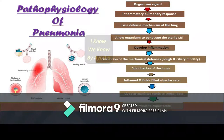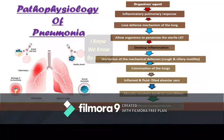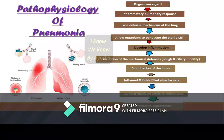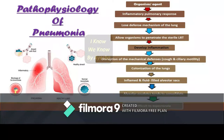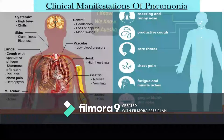Coming to pathophysiology of pneumonia: any causative agent entering the respiratory tract leads to inflammatory pulmonary responses, causing loss of the lung's defense mechanism, which allows organisms to penetrate the sterile lower respiratory tract and develop inflammation. This leads to disruption of mechanical defense mechanisms such as coughing and ciliary motility, causing colonization of the lung, inflamed and fluid-filled alveolar sacs, and excess exudate accumulation leading to difficulty in expectoration.